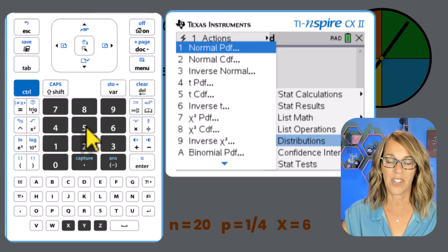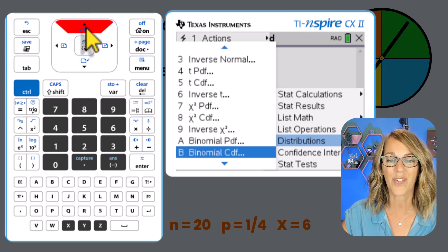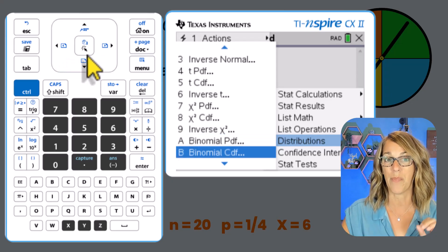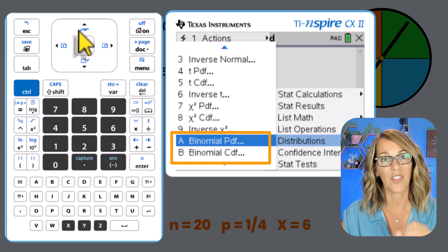And then it says, which distribution do you want? And it's all the way down here at letter A. I'm going to continue scrolling down a little bit though, so that you can see both of them. So I've got the binomial PDF, binomial probability distribution.